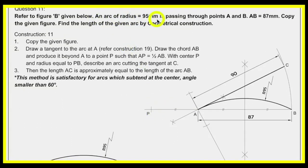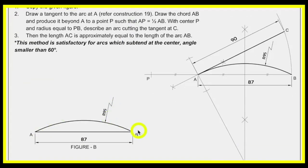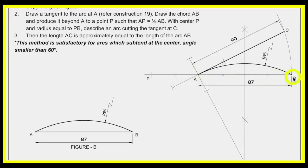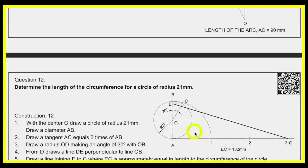You should know how to find the length of an arc by geometrical construction. First, draw the given arc, then bisect that arc. Once bisected, take half the distance and cut on the left side of A. Then from P to B draw an arc, and drop a perpendicular from O to A. You will get AC as the arc length.